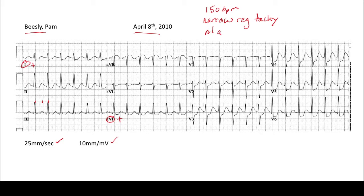For axis, we look at lead one and AVF. We see that lead one is positive, so your left thumb is up. AVF is positive, so your right thumb is up. So this is a normal axis. After rate, rhythm, axis, let's look at intervals. Looking at the P waves, it's hard to see where they are, likely due to the fact that this is a regular narrow complex tachycardia. So it's hard to assess the PR interval. The QRS is narrow. Looking at the QT, it looks like it's a little more than half of the R-to-R interval, but with fast heart rates we have to look at the QTc, because the QT interval is affected by how fast the heart is beating. So looking at the QTc generated by the EKG itself would be helpful.